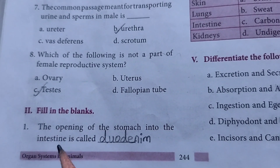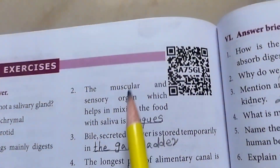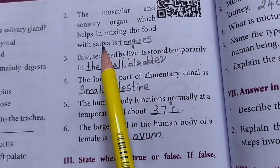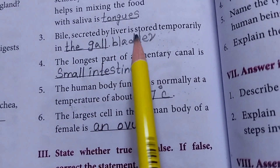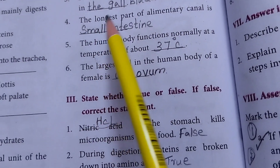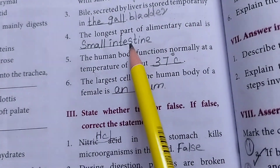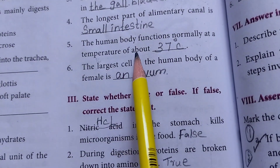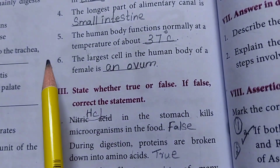Question 8: Which of the following is not a part of the female reproductive system? Answer: Option C - Testes. Fill in the blanks: 1. The opening of the stomach into the intestine is called the duodenum. 2. The muscular and sensory organ which helps in mixing the food with saliva is the tongue.